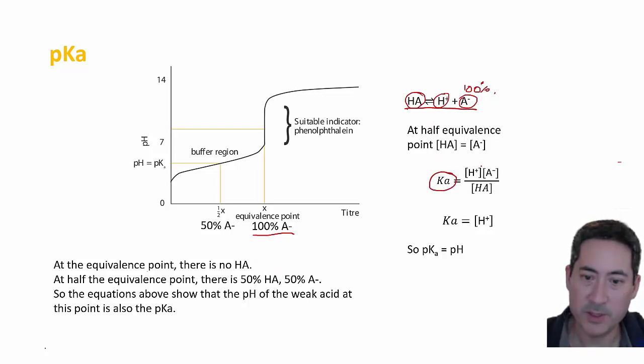So if you do the Ka equation, products over reactants here, you'll be able to substitute these in so that, say substitute HA as A- in here and you'll be able to cancel these out. And so what you'll have at the half equivalence point is the hydrogen ion concentration is equal to the Ka.